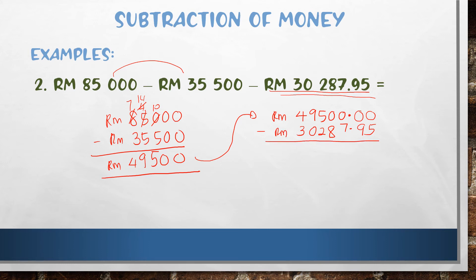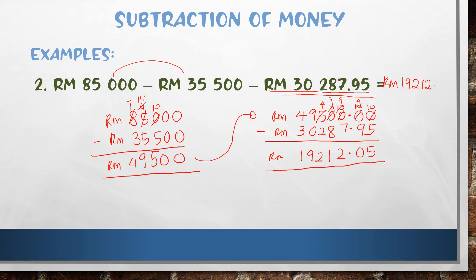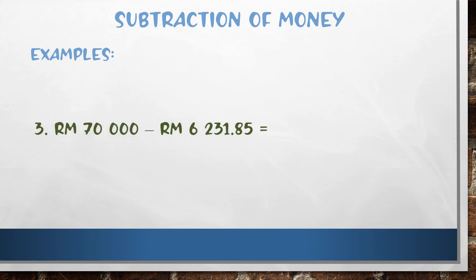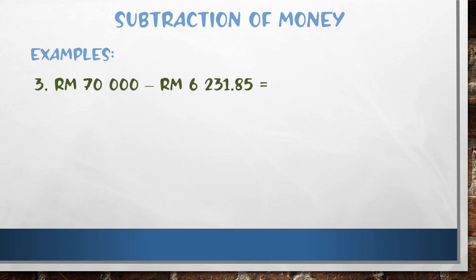Write zero zero, then the decimal point: five, nine, seven, eight, two, zero, three. Then minus. Working through: ten, nine, ten, ten, ten, minus five, five, zero, giving two, one, two, nine, one. The answer is nineteen thousand two hundred and twelve ringgit five sen.